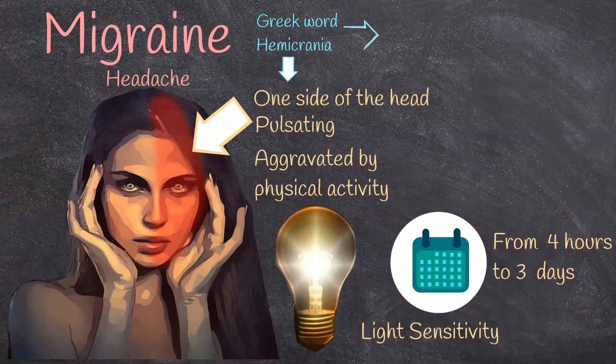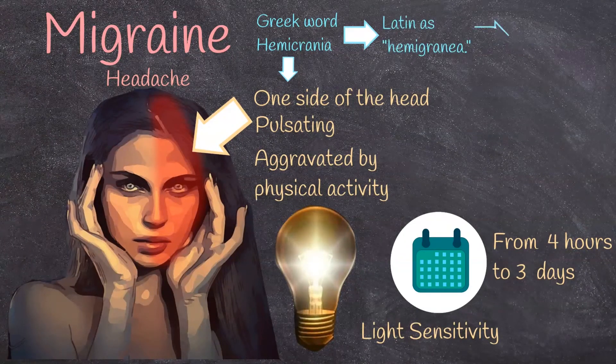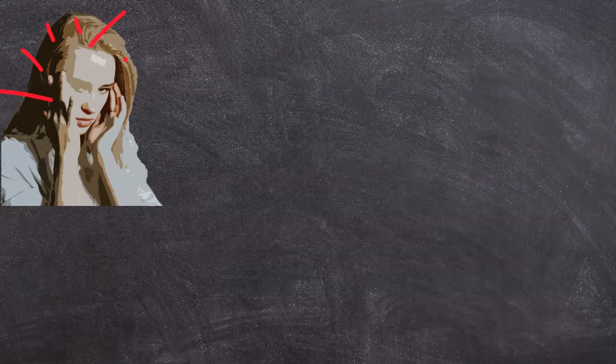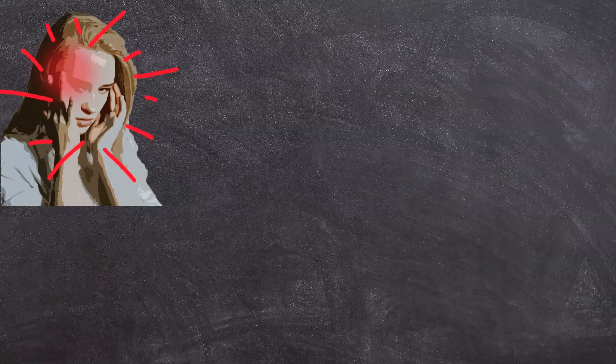The Greek word hemicrania was later converted into Latin as hemigrania, and finally into French as migraine. You may hear about aura before migraine headache, but the most common type of migraine is without aura, accounting for 75% of cases.